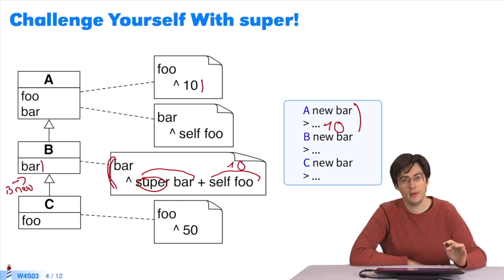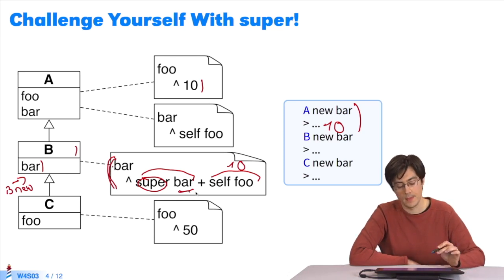In super bar, super is the receiver. But the lookup algorithm changes in the presence of the receiver super. It will seek the method bar, starting with the super class containing the keyword super. Super is located in the bar method of class B. We'll be looking for method bar, starting in B's super class, which is A. So we find this method, and that is the one executed.